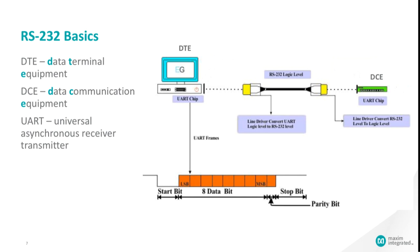Here are some of the terms associated with serial transceivers. DTE, data terminal equipment, is an end instrument that converts user information into signals or reconverts the received signal. DCE, data communication equipment, like a printer or a modem. UART is a universal asynchronous receiver transmitter.